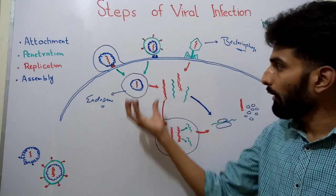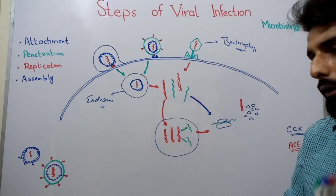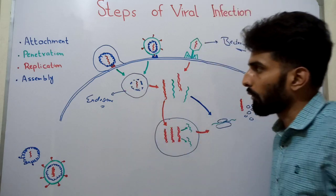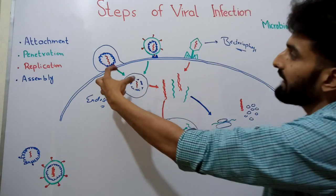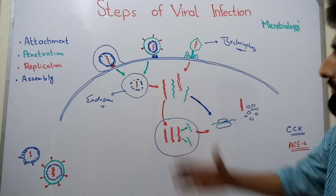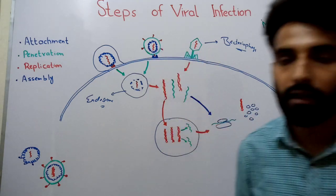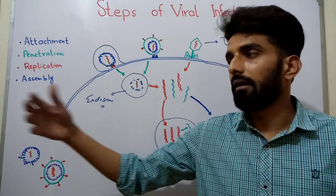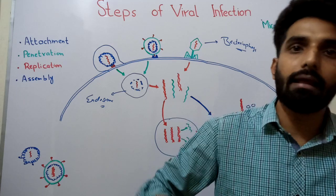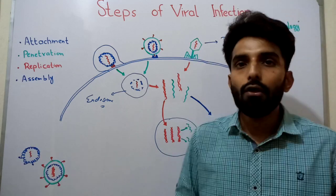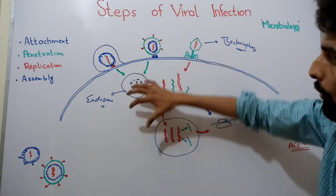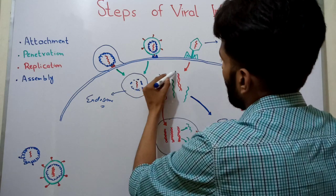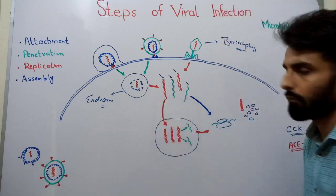This endosome fuses with the lysosome, and lysosomal enzymes degrade the capsid proteins, releasing the genome into the cytoplasm. The genome can be DNA or RNA depending on the virus type. As explained in the previous video, there are double-stranded DNA, single-stranded DNA, double-stranded RNA, and single-stranded RNA viruses. Depending on the type, they will release either their DNA or RNA into the cytoplasm.